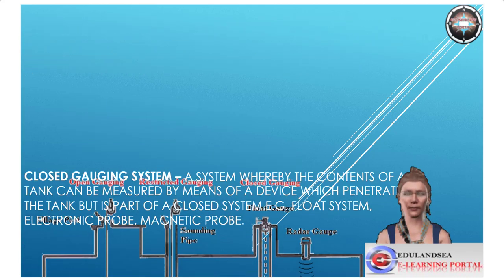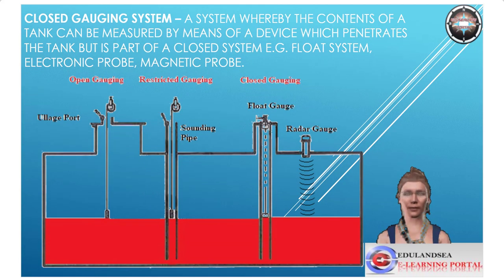Closed gauging system: a system whereby the contents of a tank can be measured by means of a device which penetrates the tank but is part of a closed system — for example, float system, electronic probe, magnetic probe.